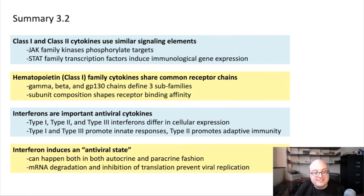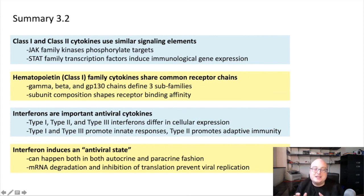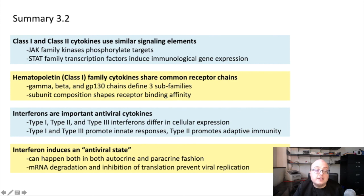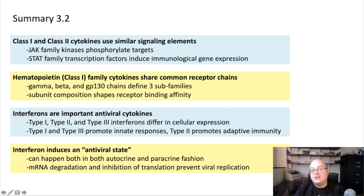Interferons importantly induce what we call the antiviral state, and this can happen in both autocrine and paracrine fashions. Interferon can signal locally — particularly for type 3 interferons — as well as systemically, since type 1 interferon receptors are expressed all over the body, allowing interferon signaling in paracrine and even endocrine fashions. The antiviral state involves three major biological events: the degradation of mRNA, the inhibition of translation in the cell, and the prevention of the assembly of viral components. Three molecular mechanisms — RNase L, PKR, and MX proteins — shape those three outcomes of interferon signaling, together comprising the antiviral state.